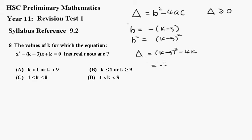And that becomes k squared minus 6k plus 9 minus 4k. And this becomes k squared minus 10k plus 9.